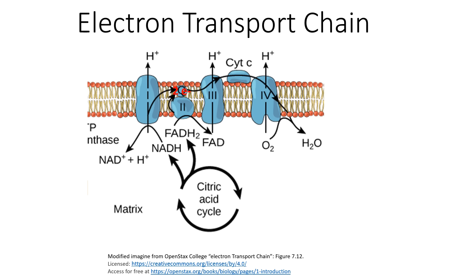What will happen next is coenzyme Q will go over to complex three of the electron transport chain, and complex three will oxidize coenzyme Q, meaning the two electrons will be removed from coenzyme Q and now be within complex three.